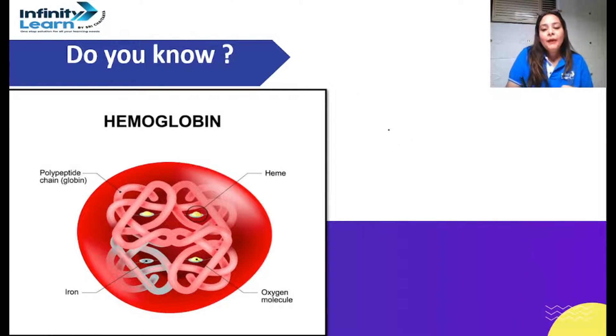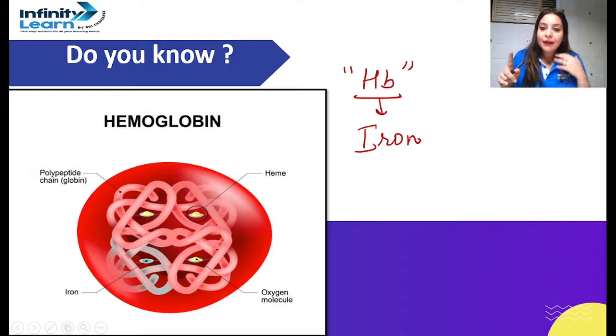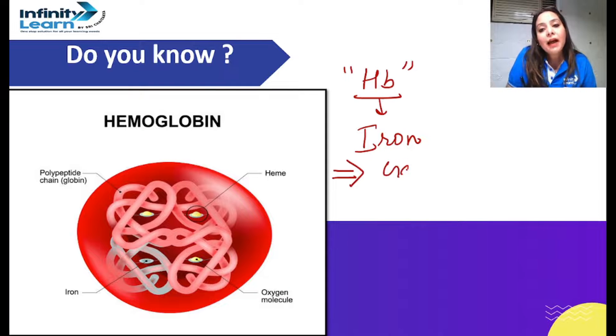Now hemoglobin, we are talking about hemoglobin. RBCs are red because it has red color pigment hemoglobin present. Hemoglobin is made up of iron. It's like chlorophyll is made of magnesium, I hope you all know. Hemoglobin is made from iron. So hemoglobin is made from iron. And what does hemoglobin do? What is its work?